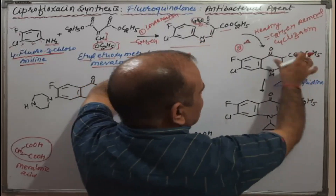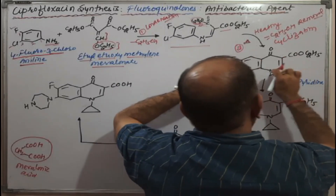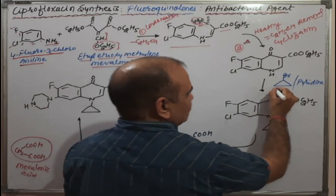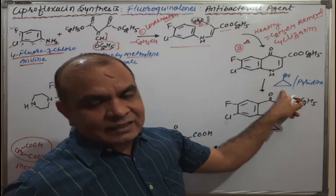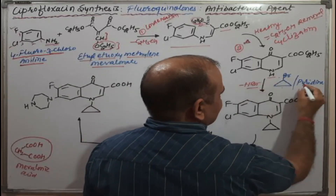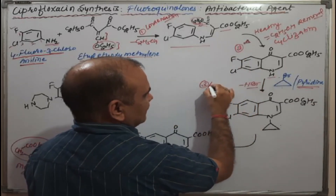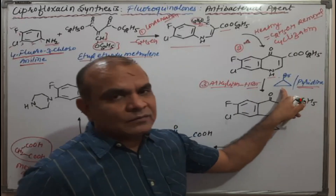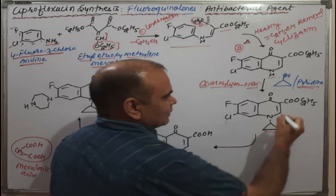After cyclization, the carbonyl group attaches and the ethoxy group is removed as ethanol — this gives us the key intermediate that closely resembles the basic structure of ciprofloxacin. In step three, alkylation takes place using a cyclopropane bromide derivative. HBr is removed in the presence of a base, and the cyclopropane ring is added — this is the alkylation step.